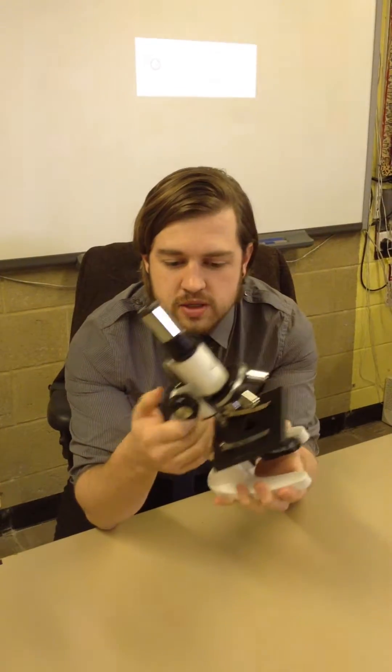Now, the arm of the microscope is where you should pick up the microscope in order to carry it and move it around the classroom. So when you go to collect your microscope, it's very important that you only pick it up using the arm of the microscope. Don't pick it up using the top part or any other part just in case you break it.